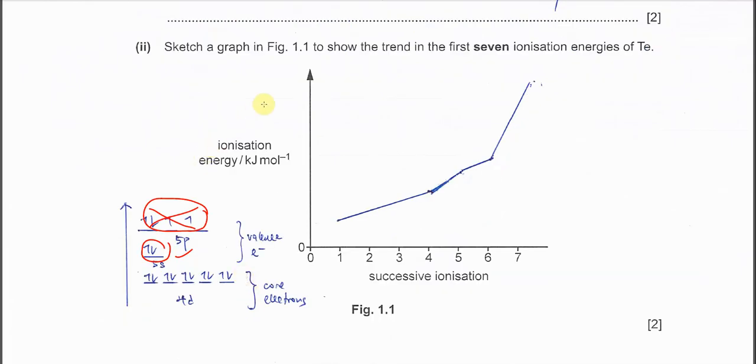Okay, part two. You need to sketch the first seven IE. Okay, in order to sketch this nicely, you need to know the electron configuration and how they removed. For the first four IE, because we know that they are all from 5p sub-shell. And the energies that needed is not really much different between them. That's why you need to draw a line, last step line, from the first to the fourth IE.